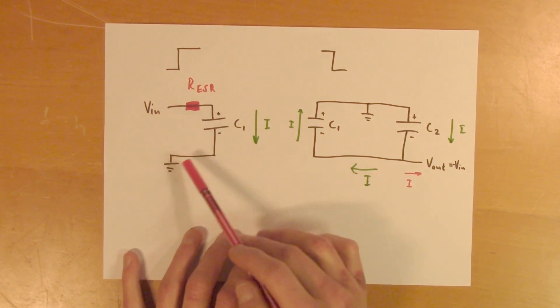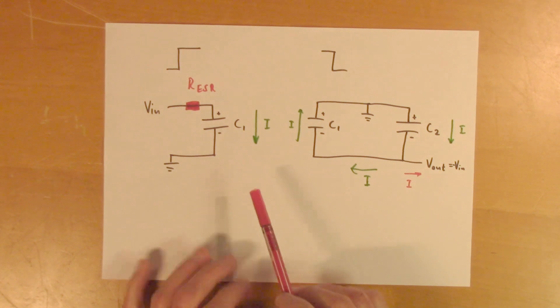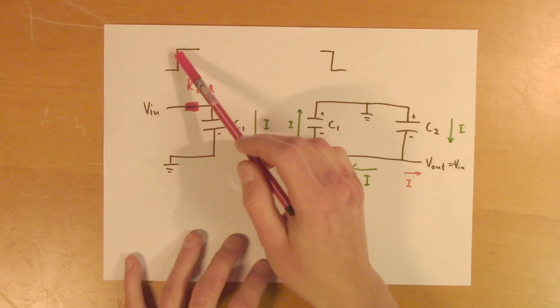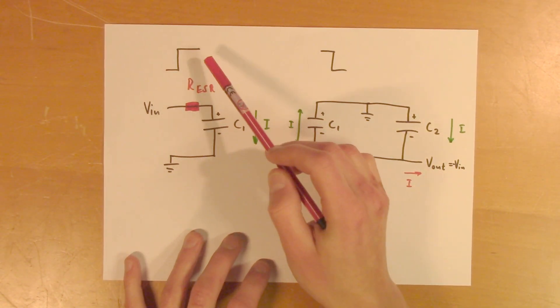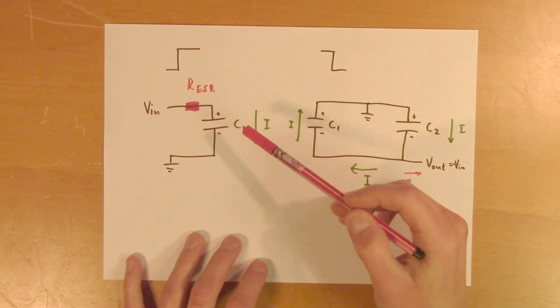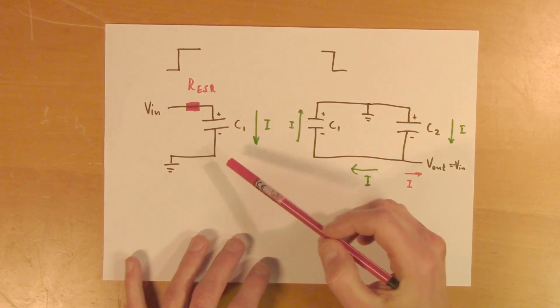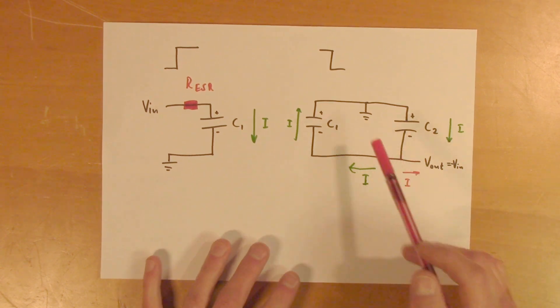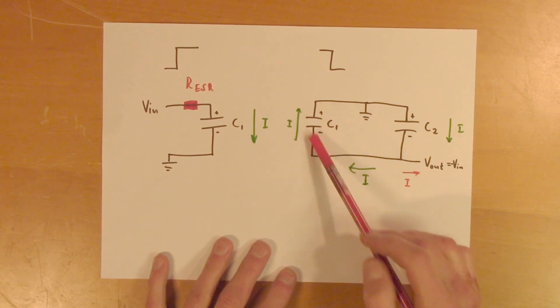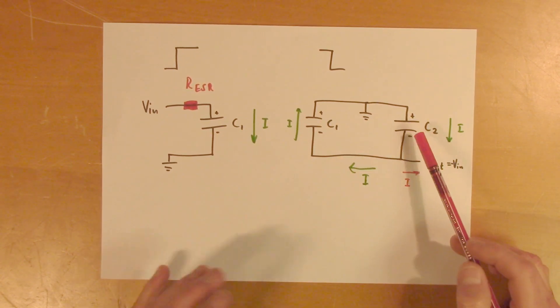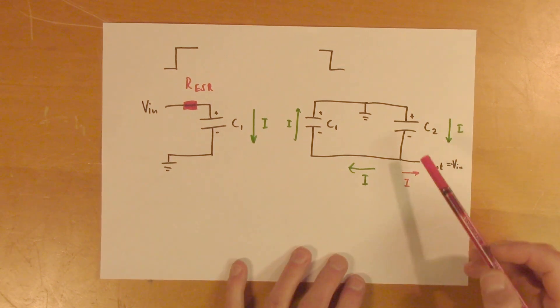But if the equivalent series resistance is too big, that means that this charging process will be much slower than usual. And that means that during this pretty short cycle, it may be that the capacitor will not have time to fully charge. So when it's then discharged, it will only be able to transfer a fraction of the charges to C2 than it's supposed to. And that will result in Vout being much lower than it should be.